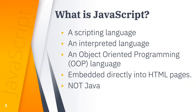So what is JavaScript? JavaScript is a scripting language. It is a lightweight programming language. It is also an interpreted language and not compiled. It is an object-oriented programming language, also known as OOP. It is usually embedded directly into HTML pages. And last but not least, JavaScript is not Java — so please take note of that.